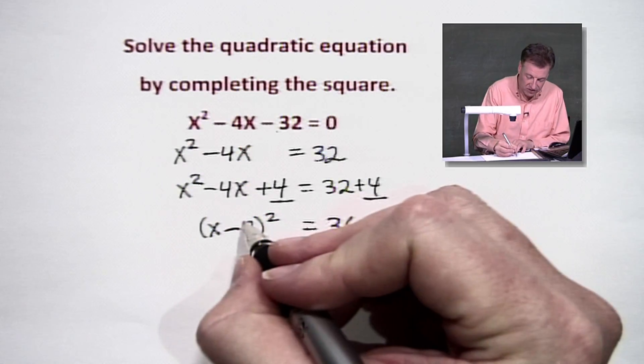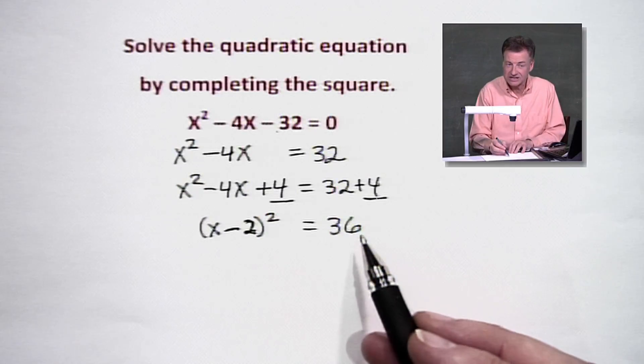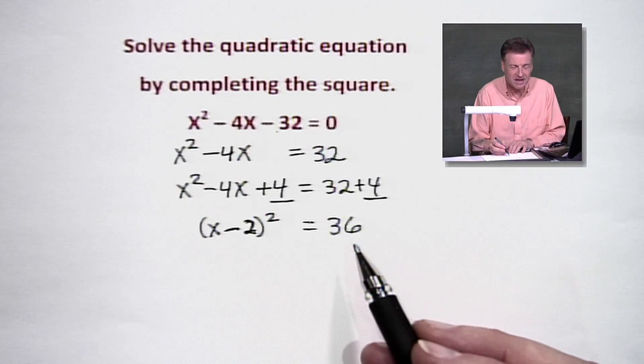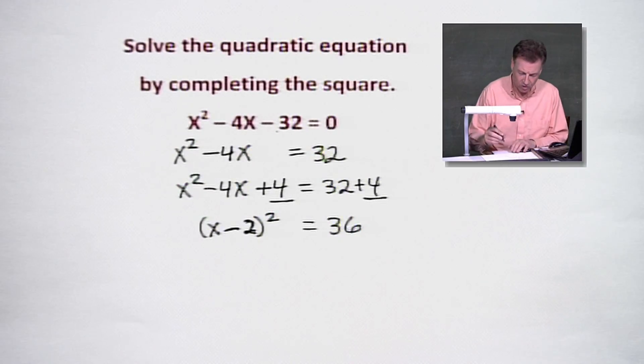So this is our binomial squared equaling a perfect square. Now, let's continue working on it. I've got a little bit more to go.